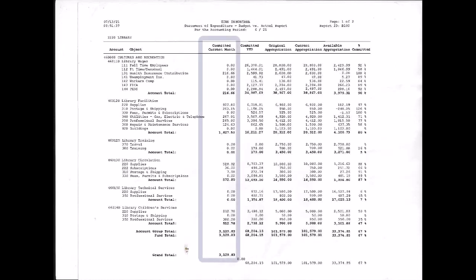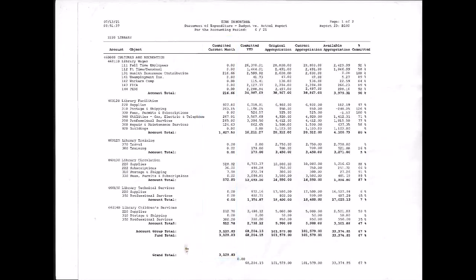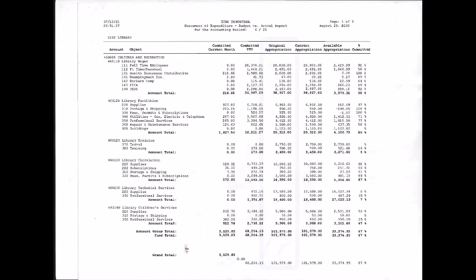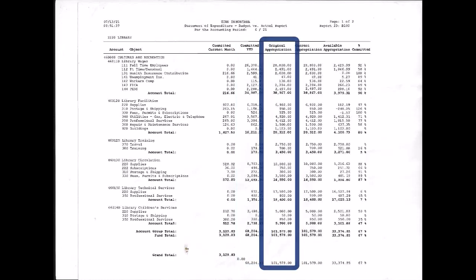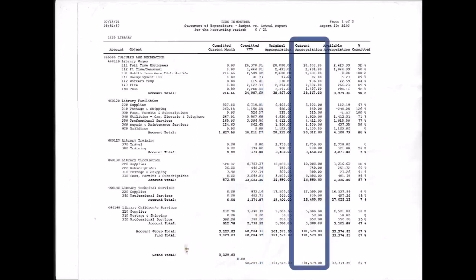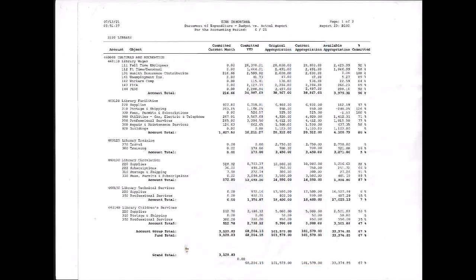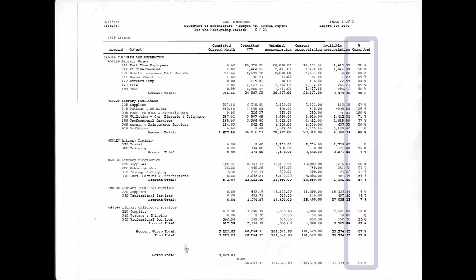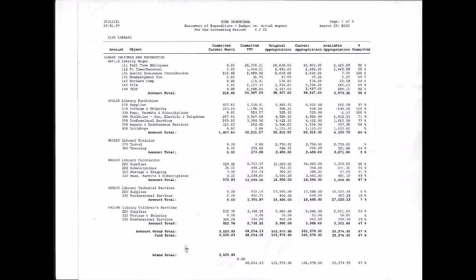Other column headings include Committed Current Month, Committed Year to Date, Original Appropriation, Current Appropriation, Available Appropriation, and the percentage of funds committed in the fiscal year.